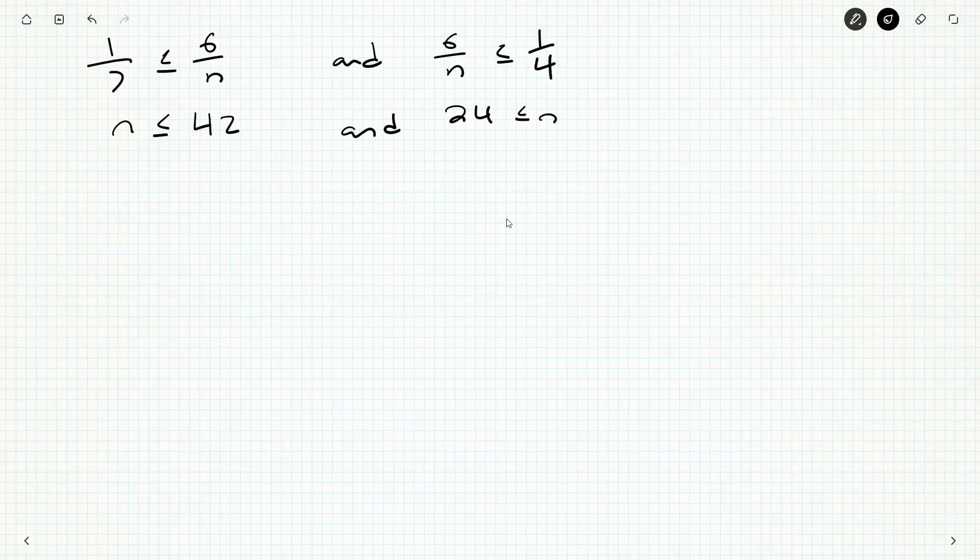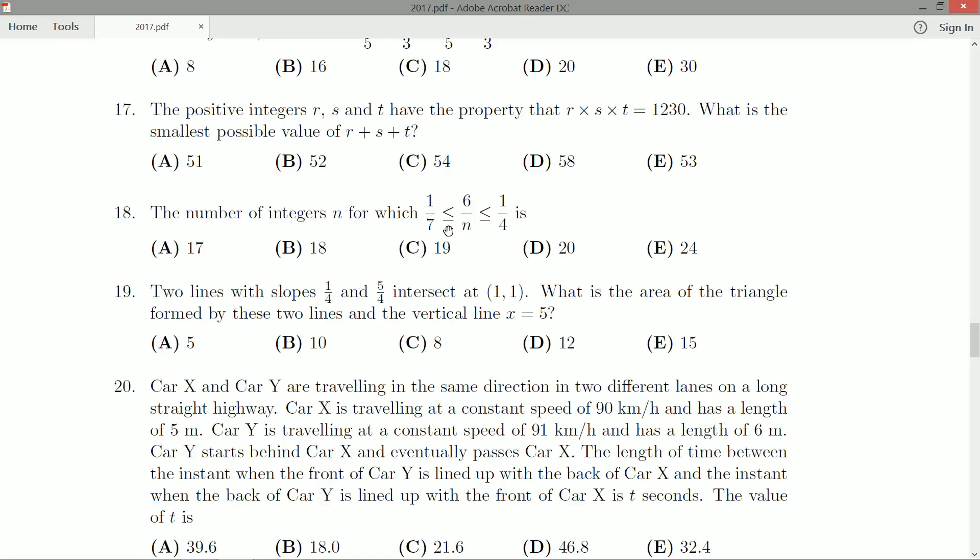So combining these two facts, we have 24 less than or equal to n less than or equal to 42. Now what exactly did we want? The number of n, the number of n that satisfy this.